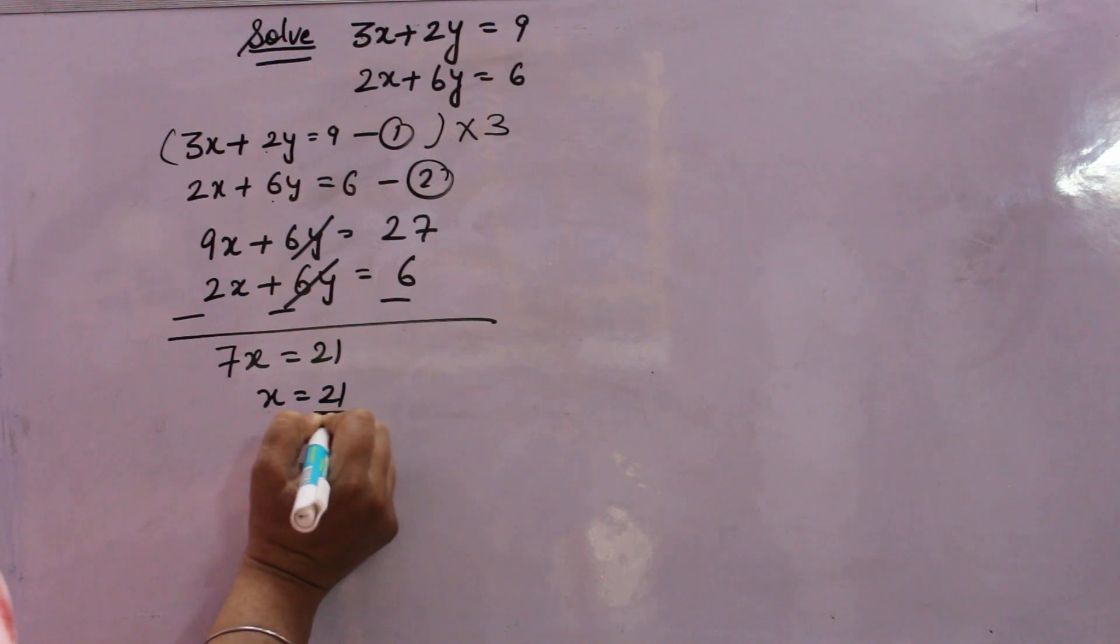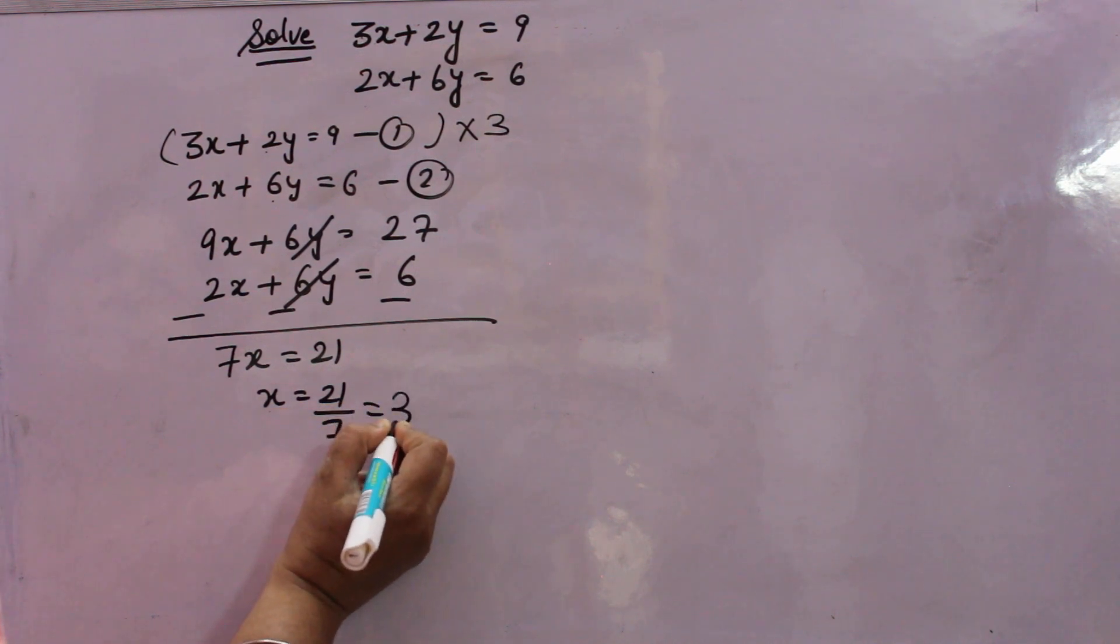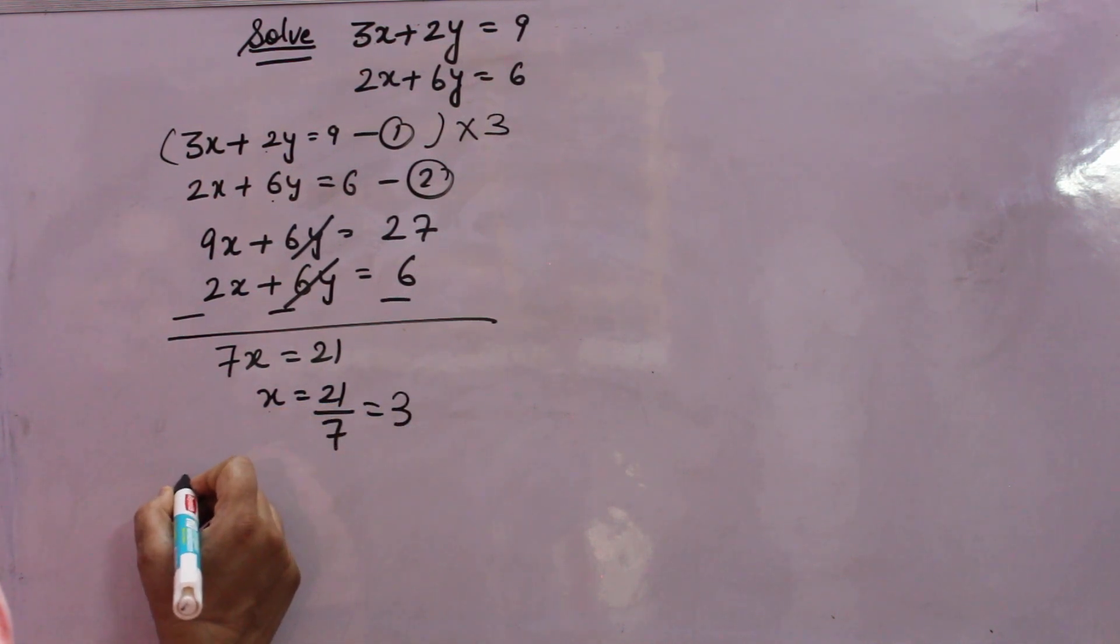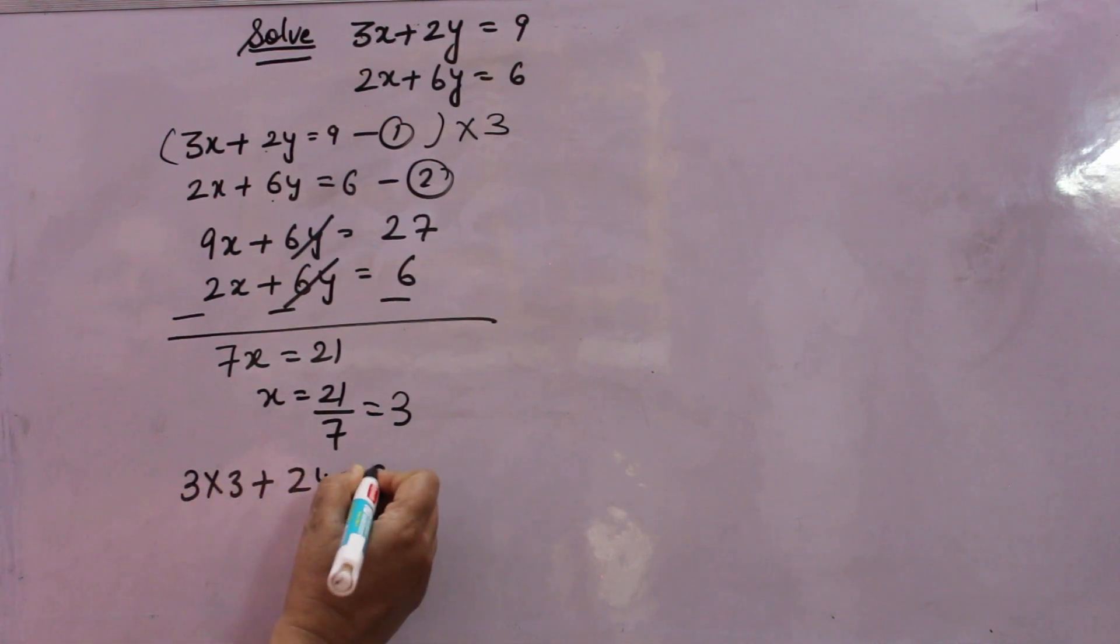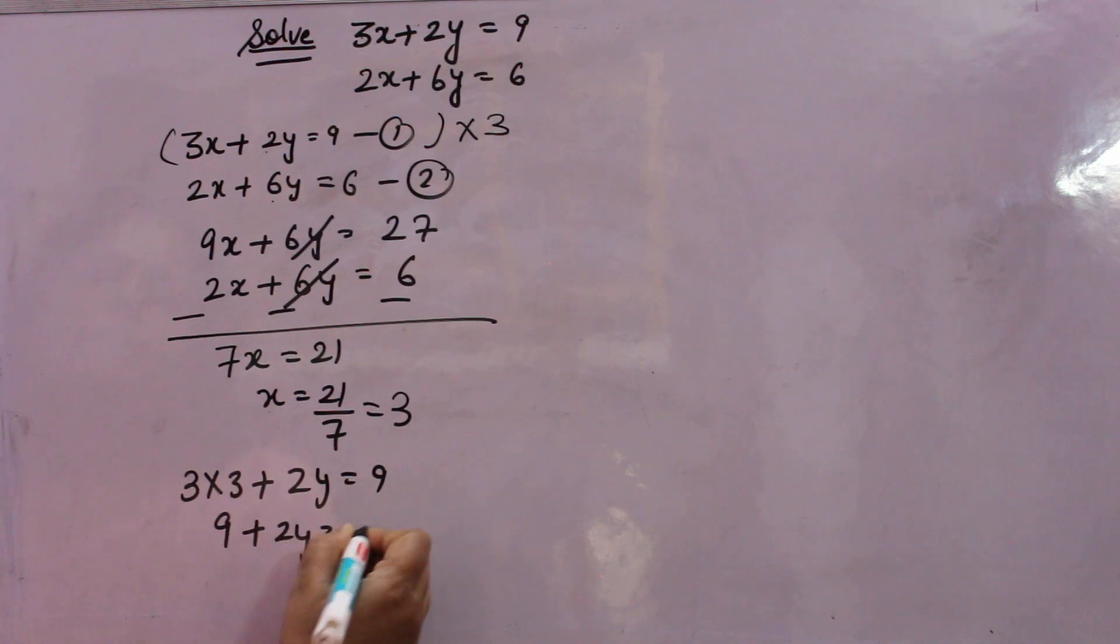So x will come 21 over 7. That is 3. Now put value of x in first equation, 3, and find the value of y. 3 into 3 is 9 plus 2y is equal to 9.